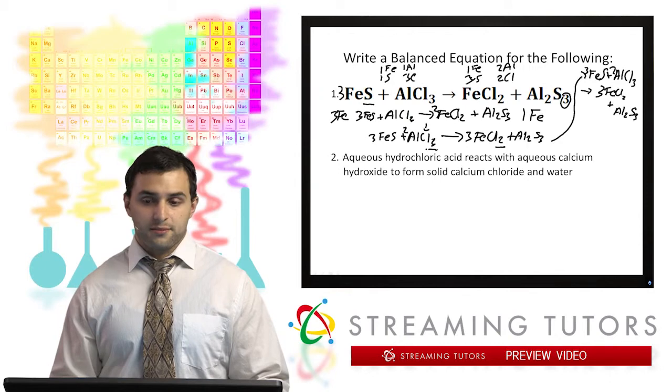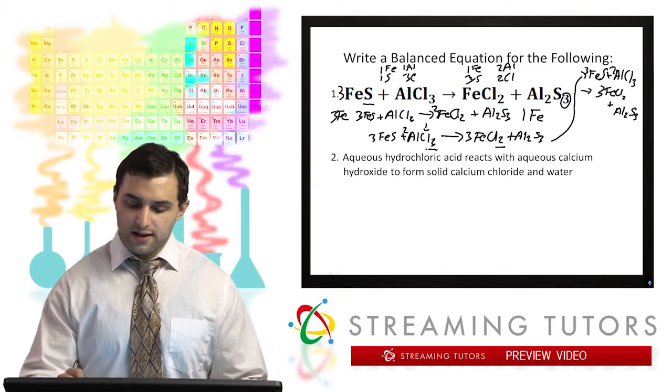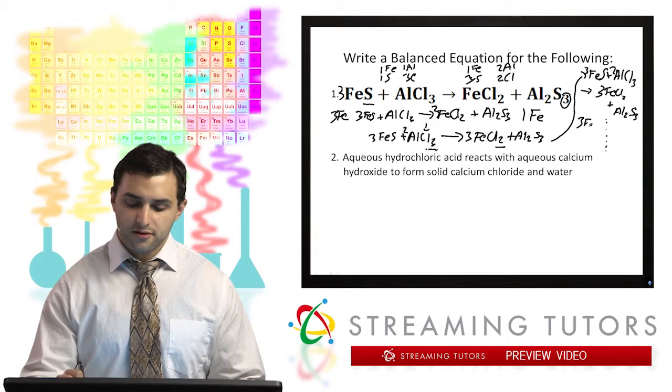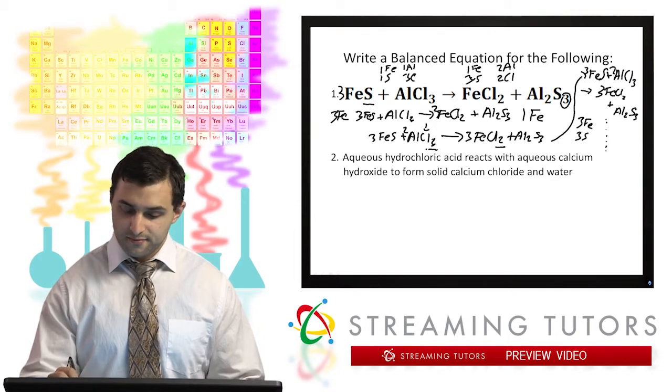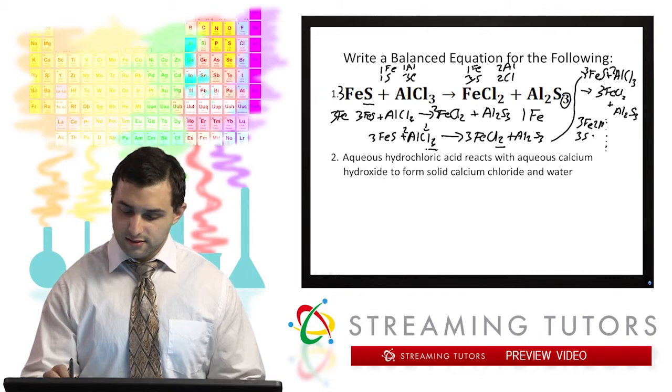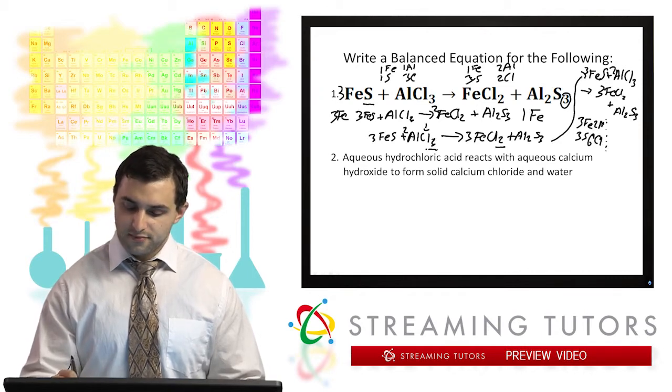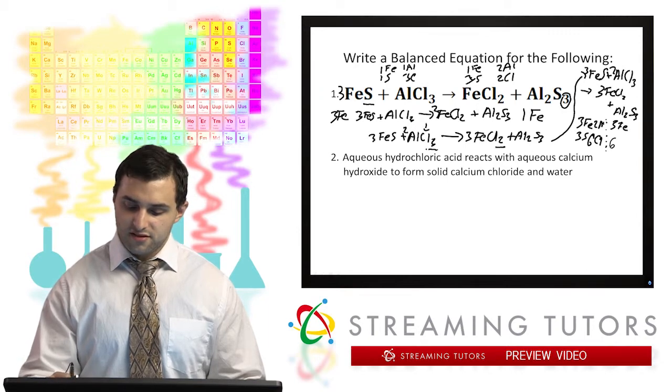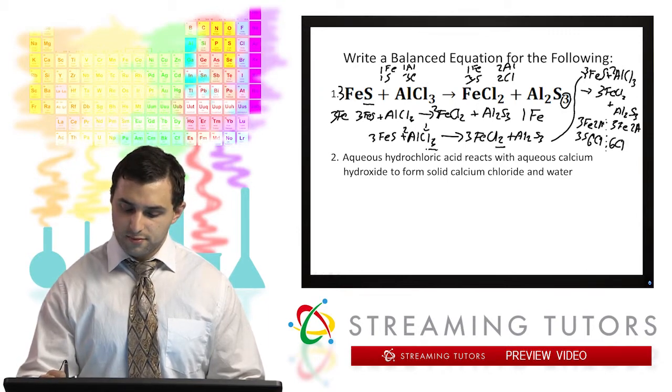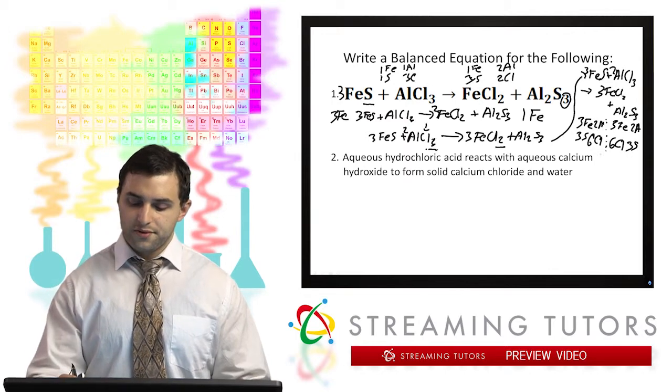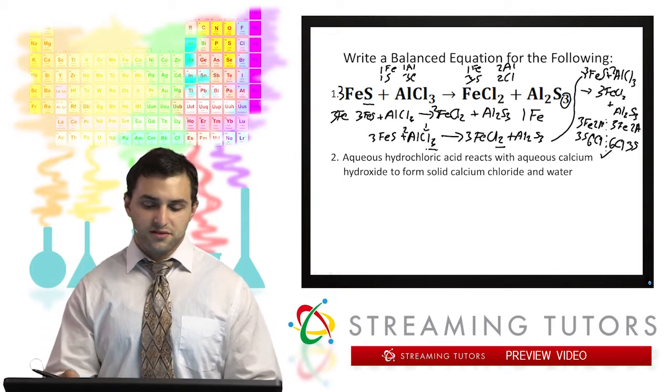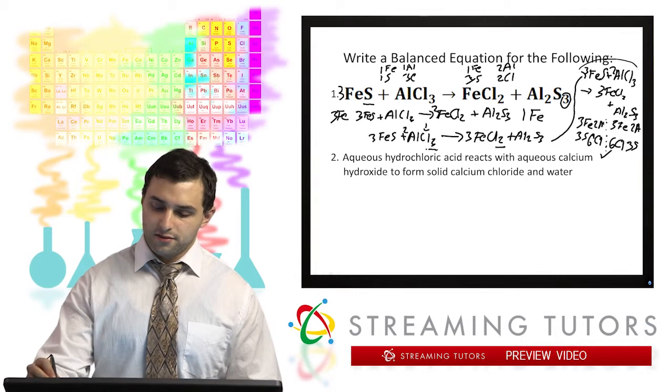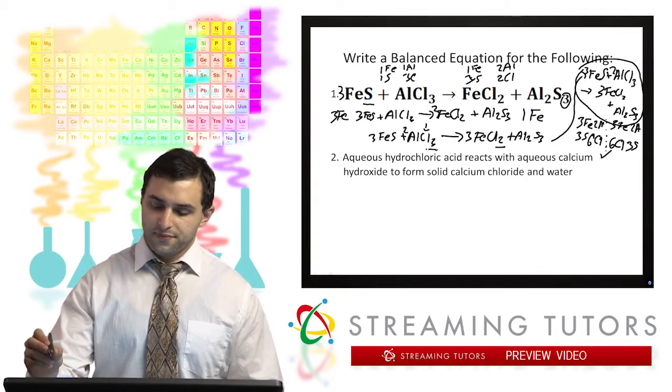We can confirm that by doing an atom count. So on the left side we have, draw a divide, three irons, three sulfurs, two aluminum, and six chlorine. On the right side we have three iron, six chlorine, two aluminum, and three sulfur. So everything checks out for that. And that's our balanced equation right here.